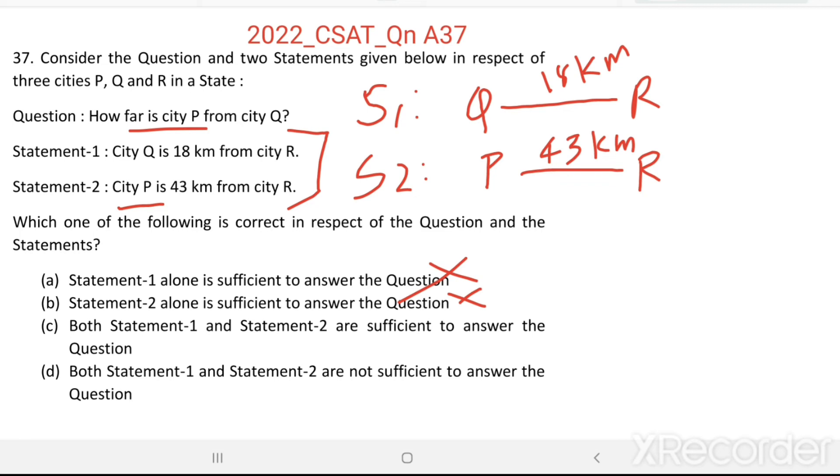Now, just combine these two statements. Q, R, P. Q to R is 18 km and P to R is 43 km. Then P to Q.